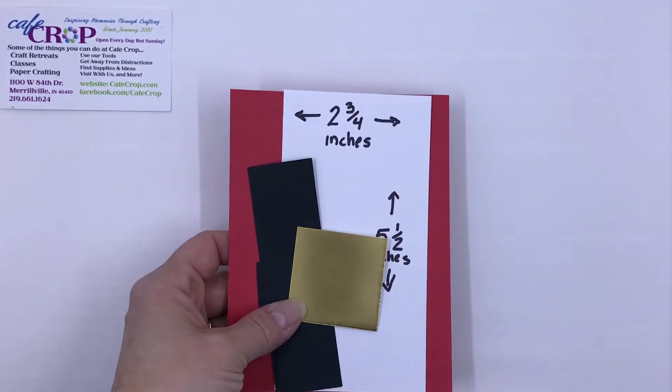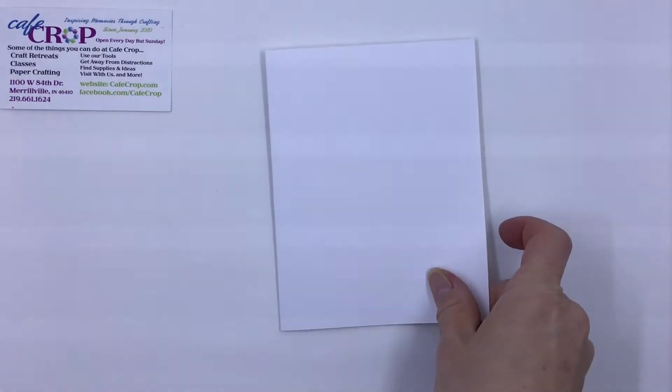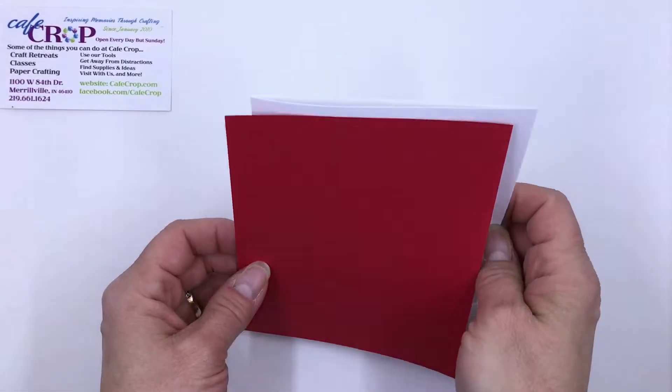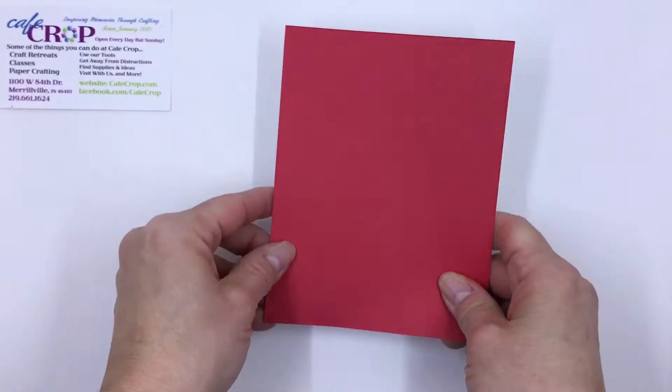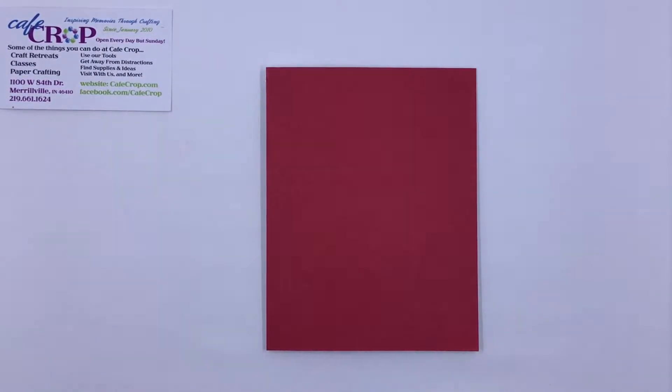All right, let's get started here. We're going to start with our card base, which I've already got folded in half here, and we're going to attach our piece of red cardstock right to the front of the card just like that. I already had adhesive on the back to make it fast and easy.